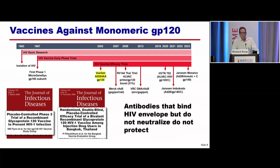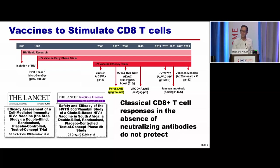For 20 years we've been doing HIV vaccine trials. What have we learned? The very first vaccines were against monomeric GP120. We found they induced antibodies that bound but didn't neutralize — so antibodies that bind to HIV envelope but don't neutralize don't protect. Around this time, data from long-term non-progressors suggested CD8 T cells could suppress virus. Merck developed a vaccine to make classical CD8 T cells against the virus, with the hope that people would be infected but suppressed with very low viral loads. Those AD5-based trials didn't work — classical CD8 T cells in the absence of neutralizing antibodies do not protect.